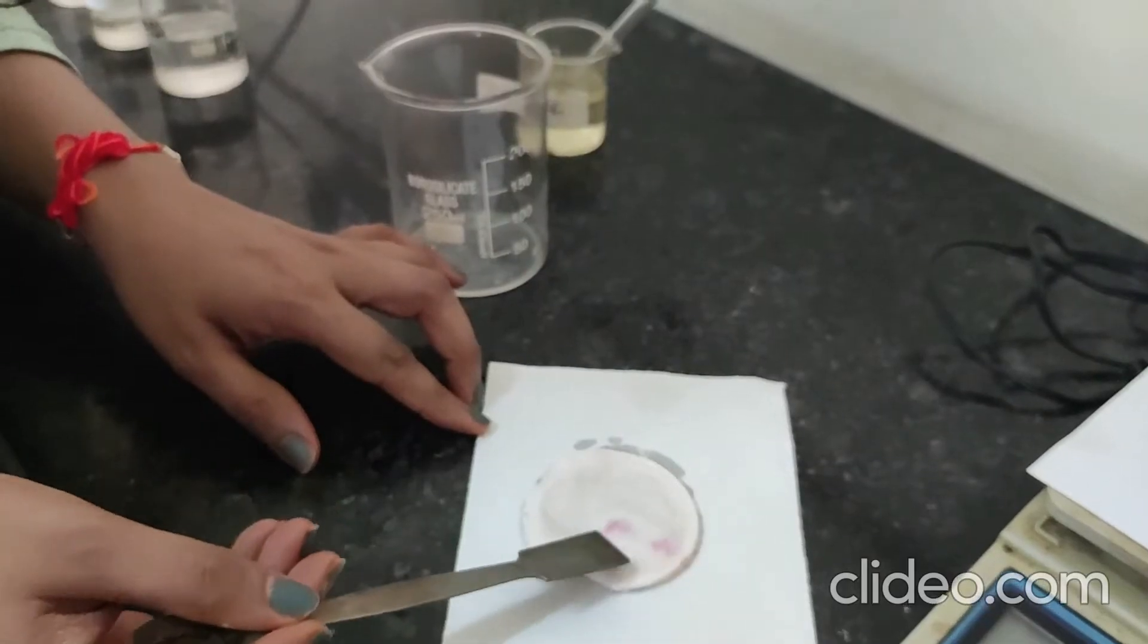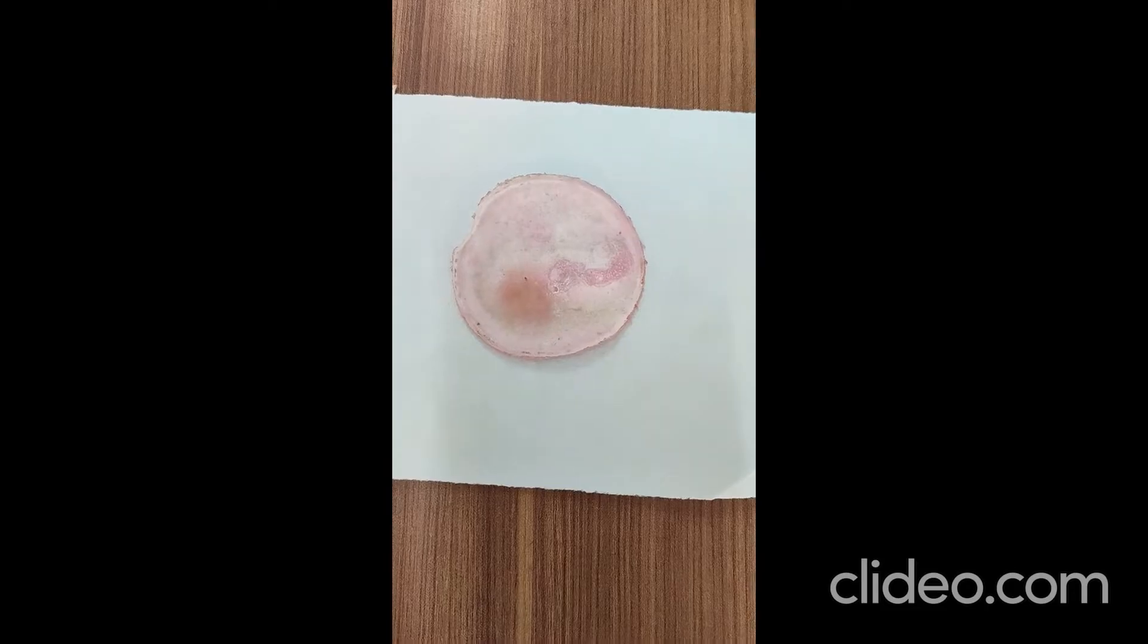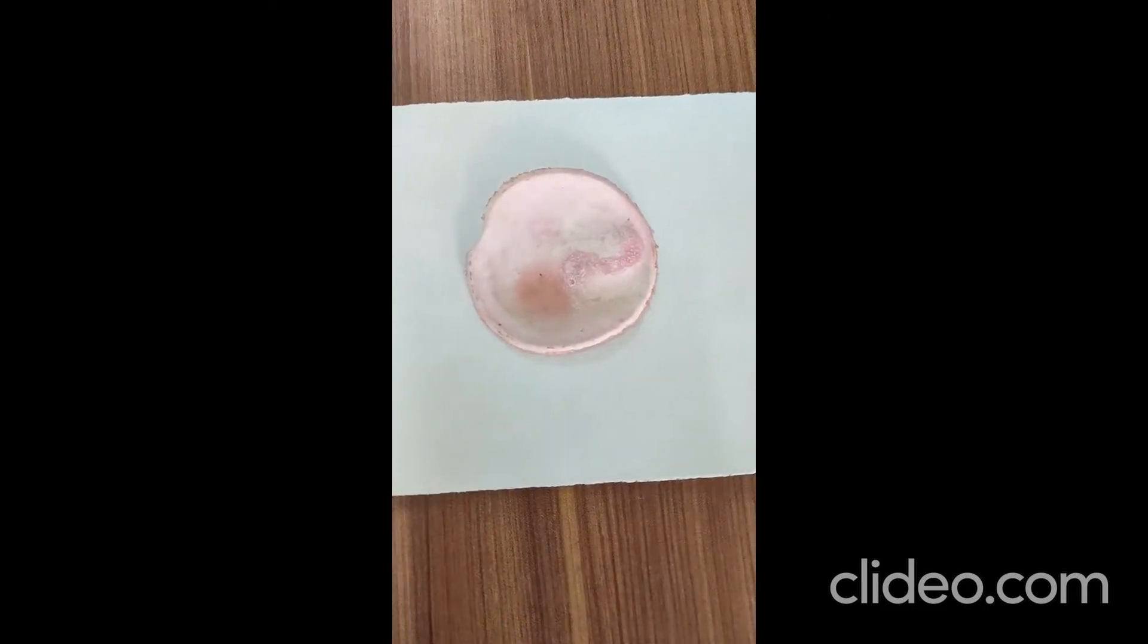Dry the content and note the yield weight. This is the dry bakelite of light pink color.